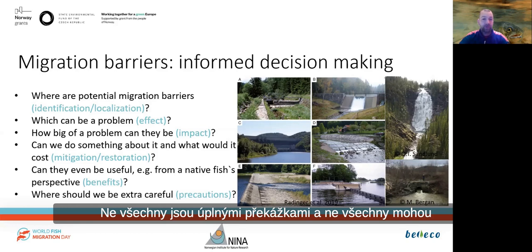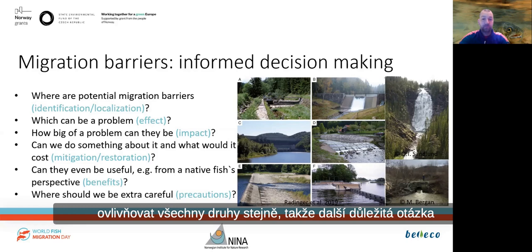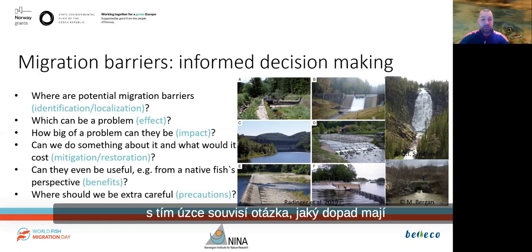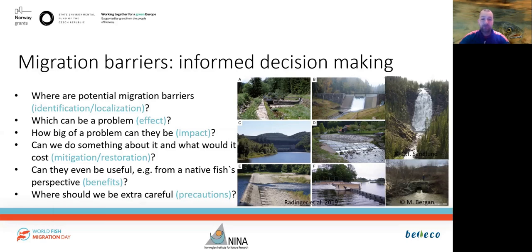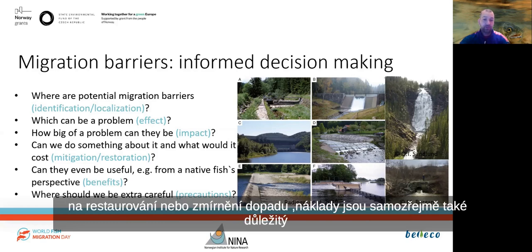Not all of them are complete barriers, and not all of them affect all species equally. So another important question is which effect potential migration hindrances in fact have. Closely related to that is the question of what impact they have — for example, how much of the natural habitat of species do they impact negatively? In order to prioritize potential conservation measures like restoration or mitigation, costs are of course also an important issue.